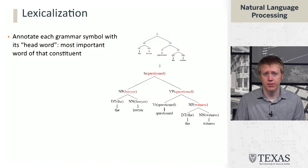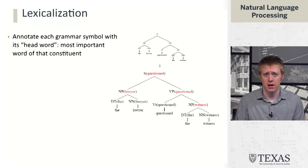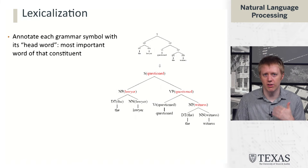Lexicalized parsers annotate each grammar symbol not with something about its context like siblings or parents, but instead with a so-called head word — the most important word of that constituent. A simple heuristic: for a verb phrase the head is a verb, for a noun phrase the head is a noun, and for a sentence the head is also a verb, because a sentence is fundamentally describing some kind of event. We can write down a set of rules that identify these heads — for example, in a noun phrase the last word, or the last word before a preposition, is typically the head.